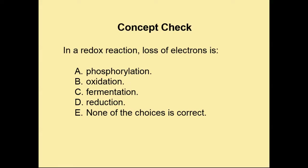Concept check: if we have a redox reaction, the loss of electrons is going to be known as — phosphorylation, oxidation, fermentation, reduction, or none of the choices above? So losing an electron — is that going to be phosphorylation, oxidation, fermentation, or reduction? If you don't know the answer, you can rewind the video, check your PowerPoints, or check your textbook.